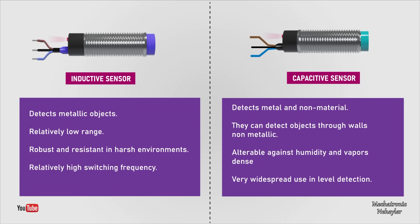Inductive sensors detect only metallic objects, with a relatively low range that varies depending on the nature of the alloy. They are robust and resistant in hostile environments, unalterable against shocks, vibrations, and dust, and have a relatively high switching frequency, making it possible to control the passage of parts at high speed. They have no moving parts subject to wear. Capacitive sensors detect ferrous metals and any other type of material, and can detect objects through non-metallic walls. They are alterable against humidity and dense vapors. They have widespread use for level sensing — for example, through plastic bottles — and for short-range sensing of transparent materials. They have an absence of mechanical wear and long useful life.